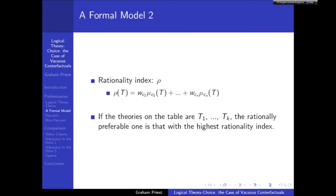I'm not suggesting that when scientists or theoreticians actually try to figure out which theory is rationally best, they do this explicitly. I think they probably do it inchoately. But I think something like this is the kind of inchoate procedure that goes on when theorists choose which theory they find rationally preferable. That's the first half of the preparatory material — a sort of formal theory of theory choice. Let me pause and see whether you have any questions.